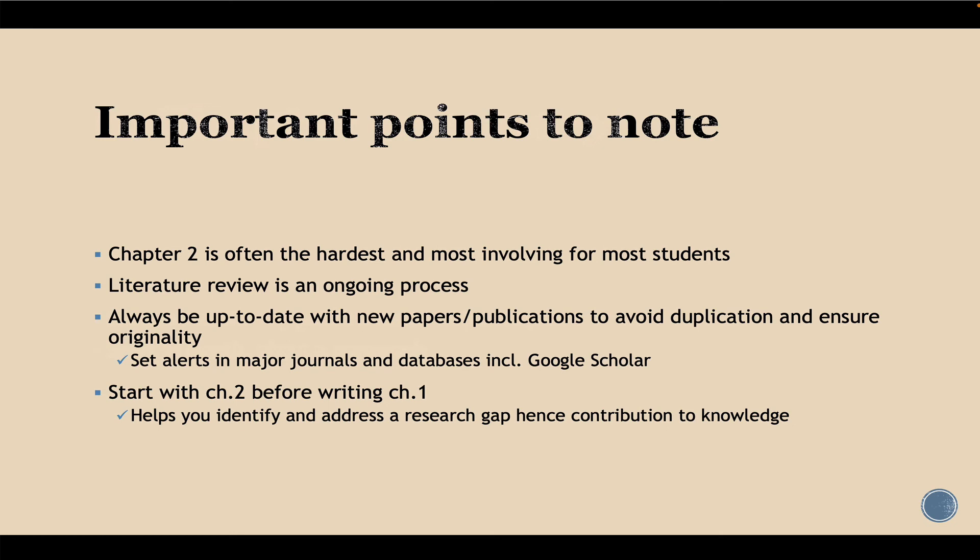Being up to date with new publications also helps you to be original — not doing what other people have already done. To help stay up to date, it is good to set alerts in major journals and databases, including Google Scholar. You can set alerts by specifying keywords or the topic of your study, and those journals or databases will notify you every time a new publication is published in your topic of study.